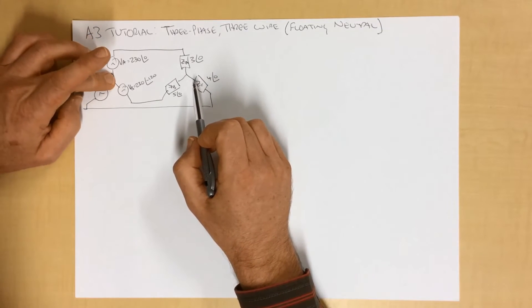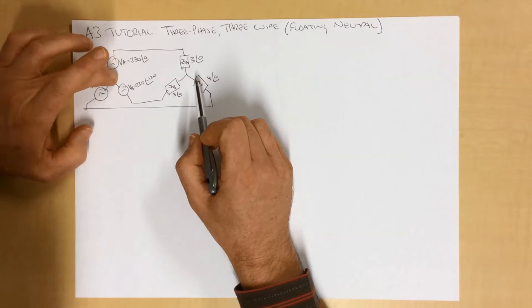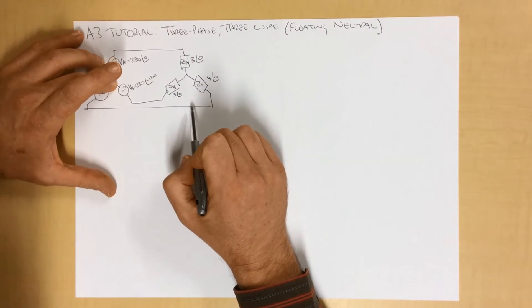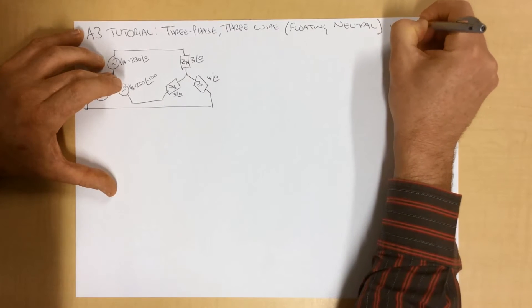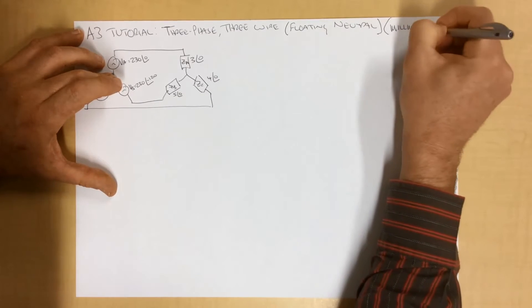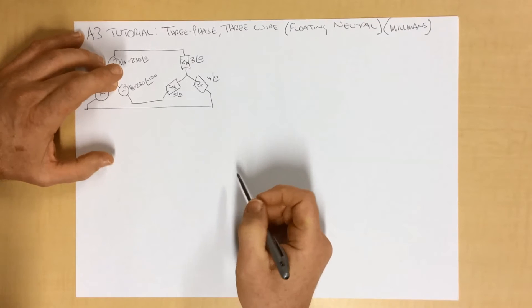But we do have a theorem that explains the relationship between this point and this point. And this theorem is called Millman's.